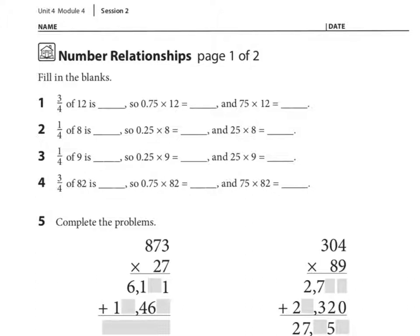Number 1 says 3 fourths of 12. So remember, when we see a problem like this, we're thinking of what is 12 divided by 4. So 12 divided by 4 is 3. Now that is 1 fourth of 12, but we want 3 fourths of 12.